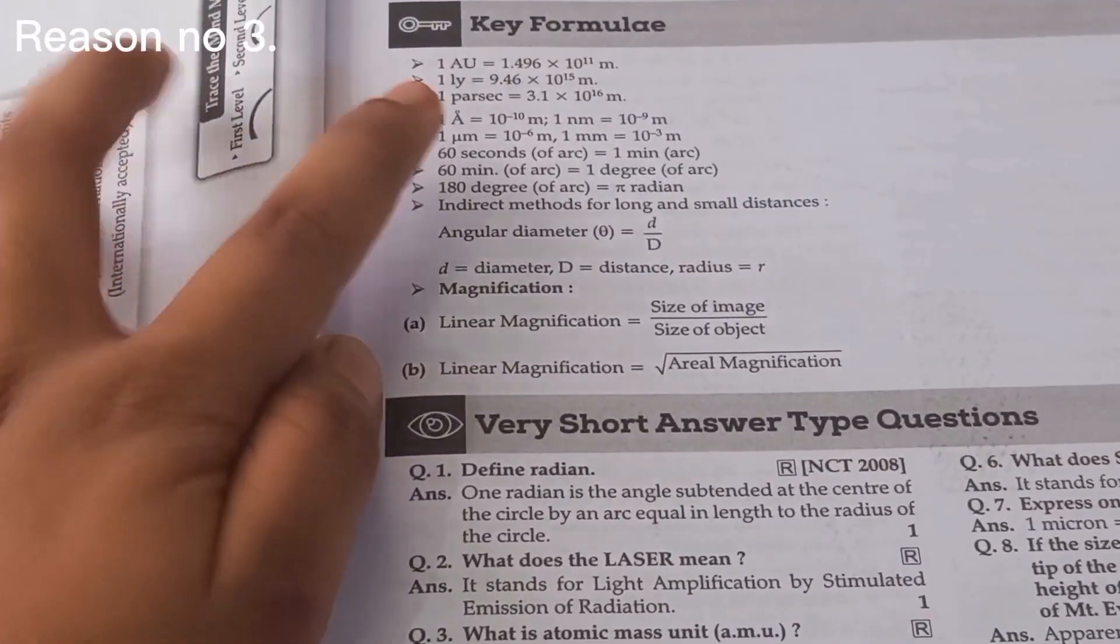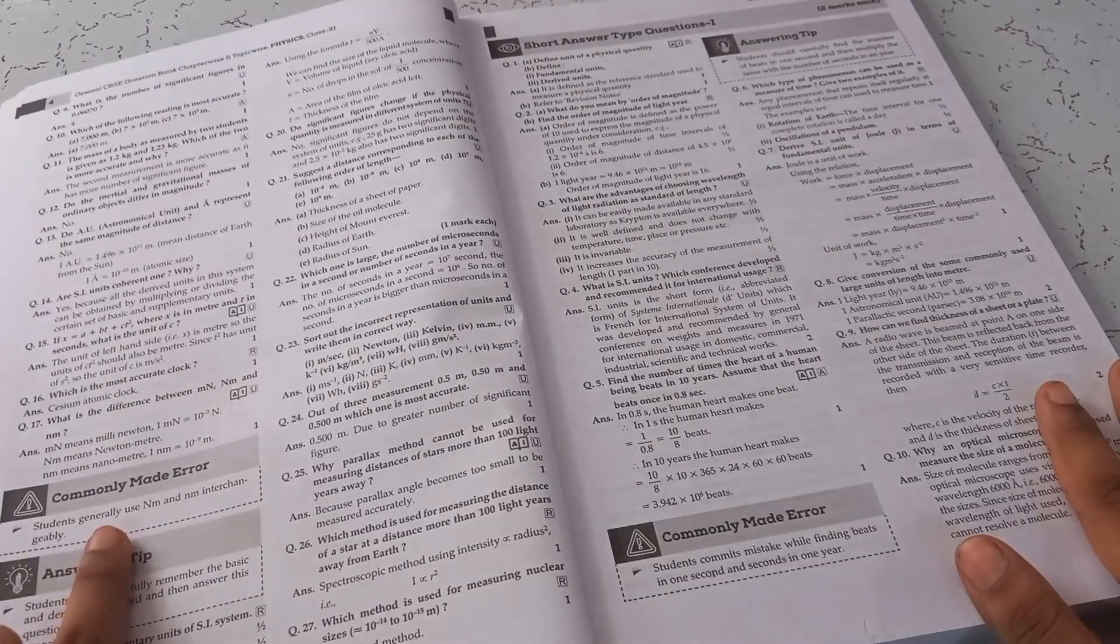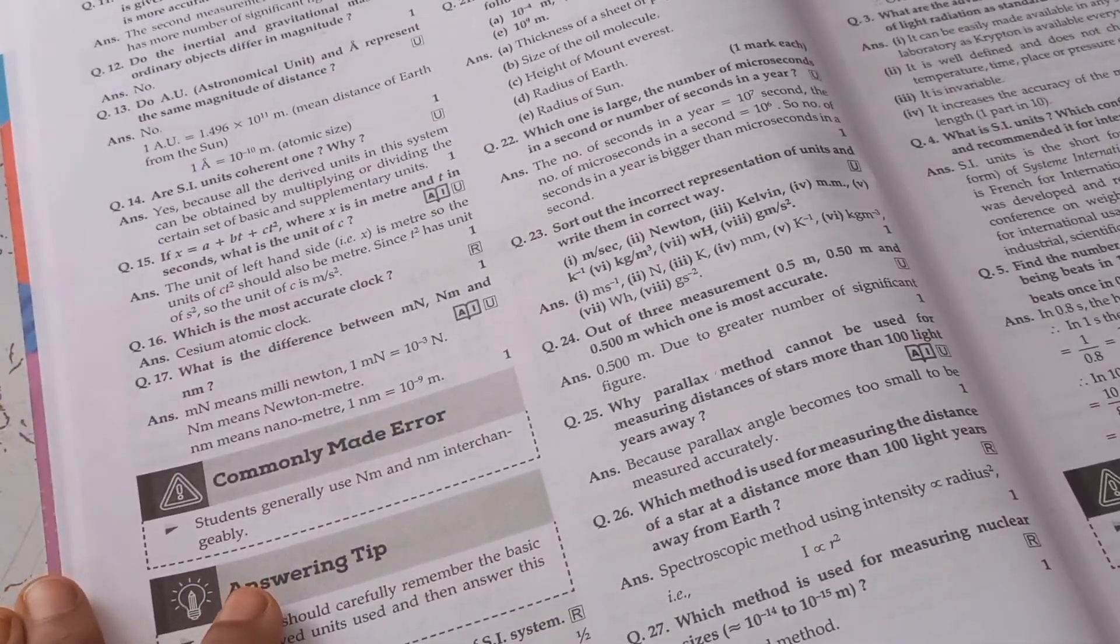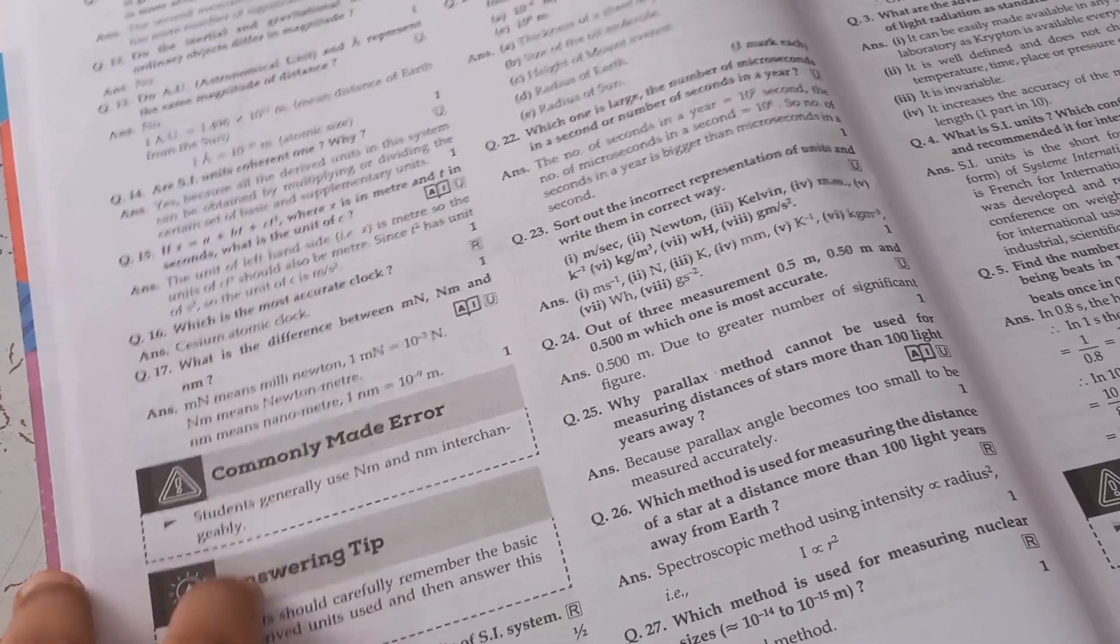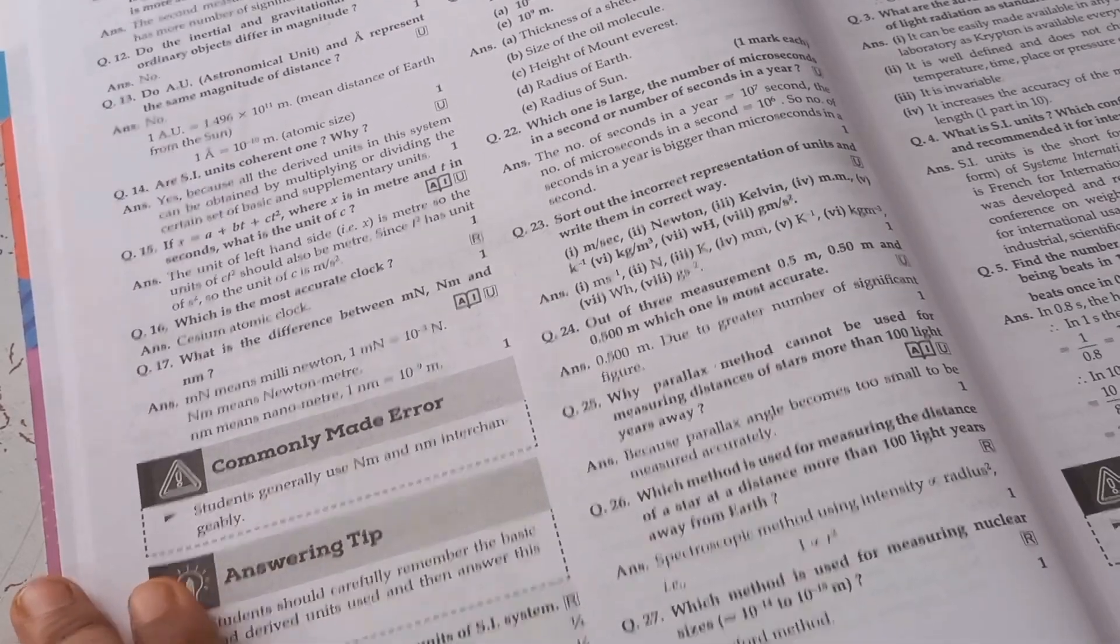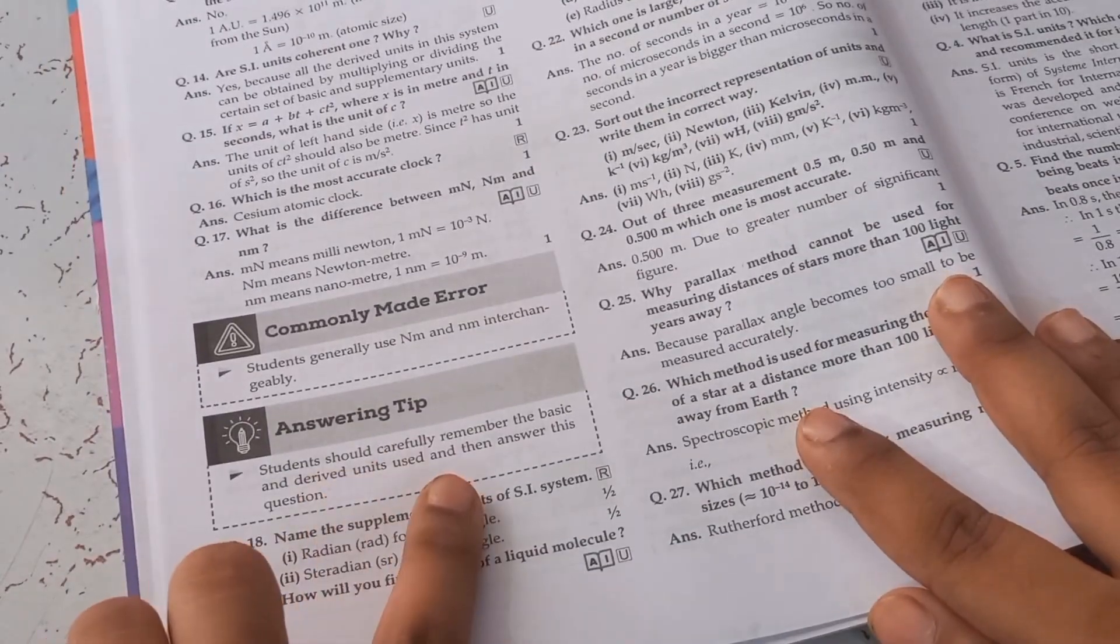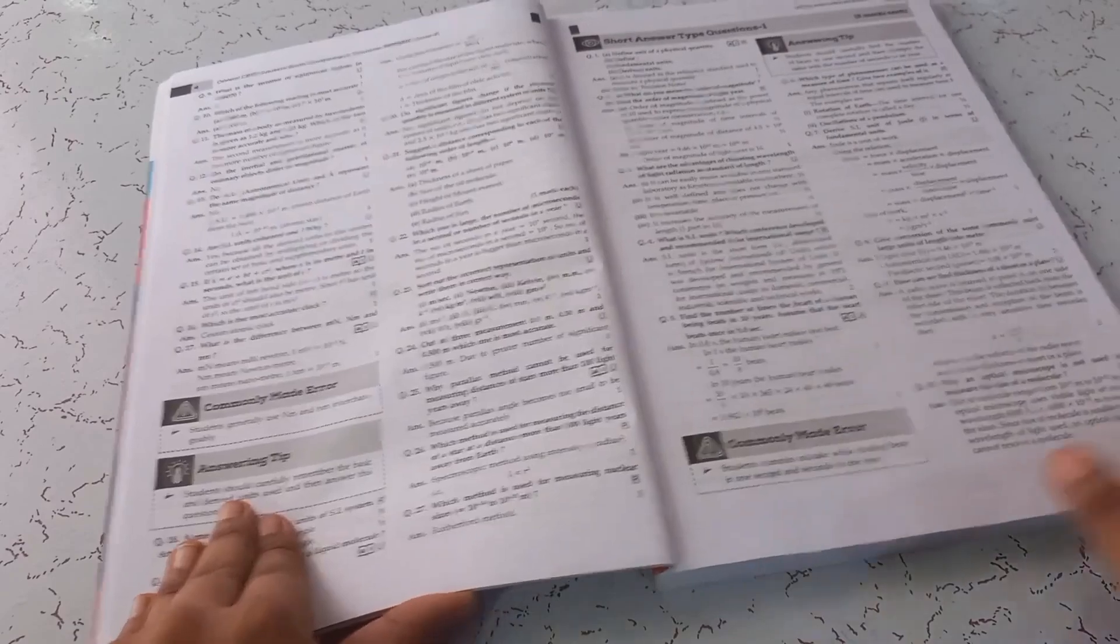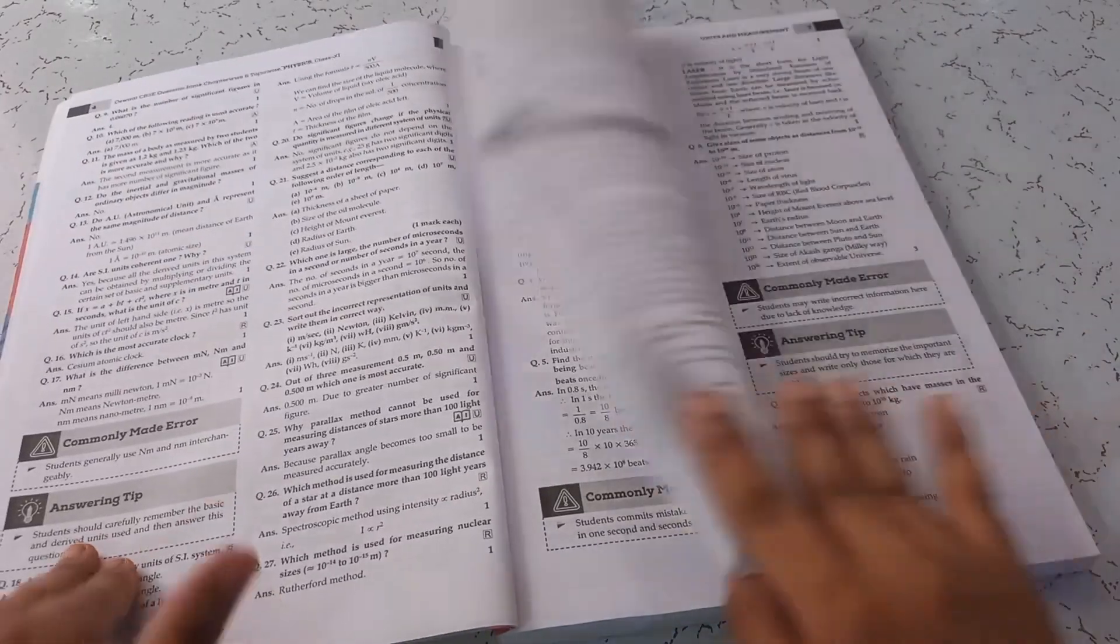Reason number three, key formulas. After every topic, it has a common box of commonly made errors and answering tips. We all make common errors in solving a few questions and here it has given that with some tips on how to solve those questions.